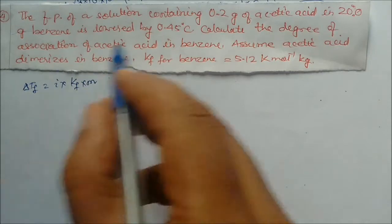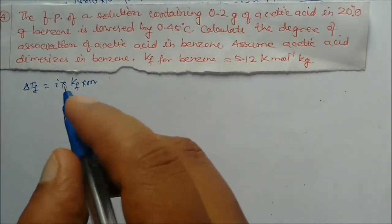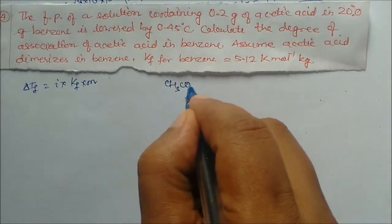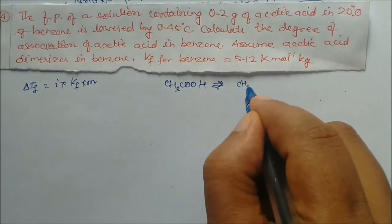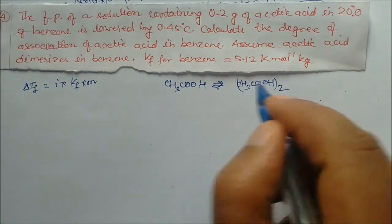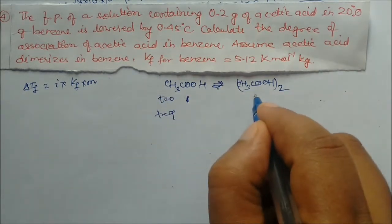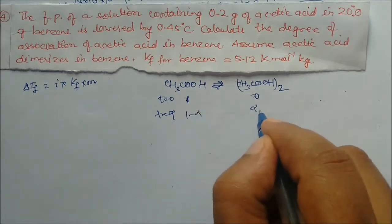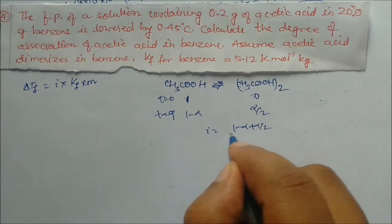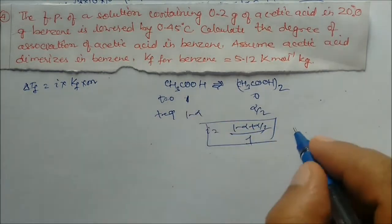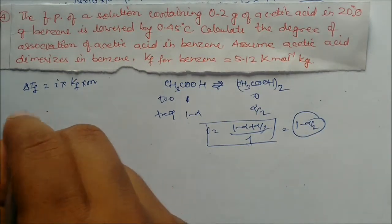We use delta Tf = i × Kf × m. Acetic acid dimerizes: 2 CH₃COOH → (CH₃COOH)₂. At t = 0: 1, 0. At equilibrium: (1 − α), α/2. Total moles = 1 − α + α/2 = 1 − α/2. Since initial moles = 1, i = 1 − α/2.